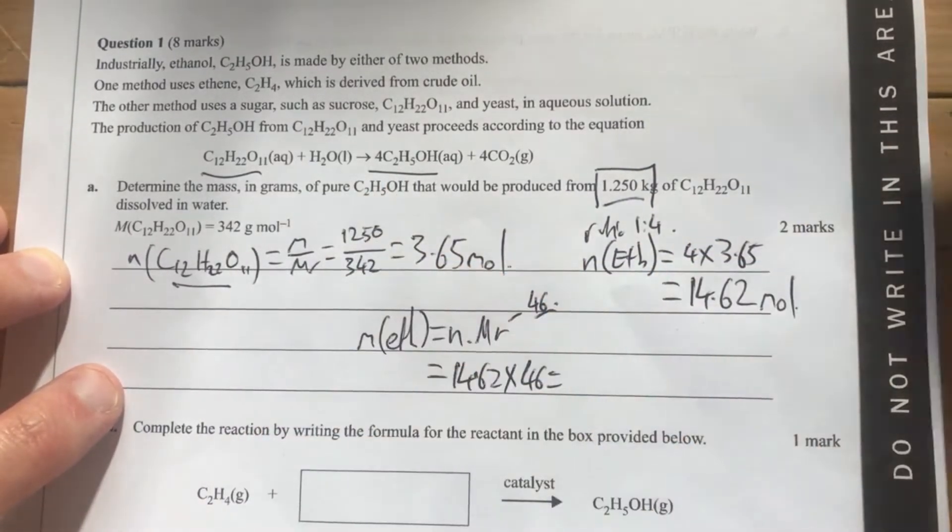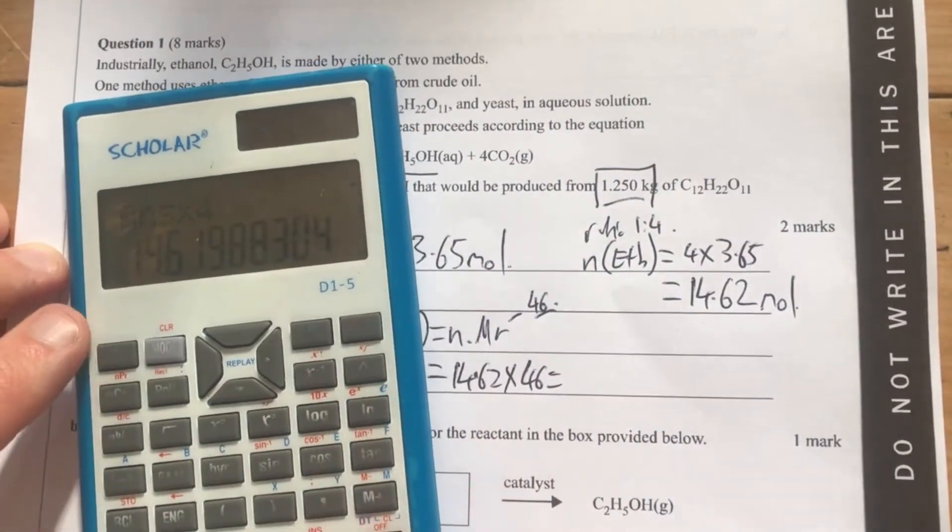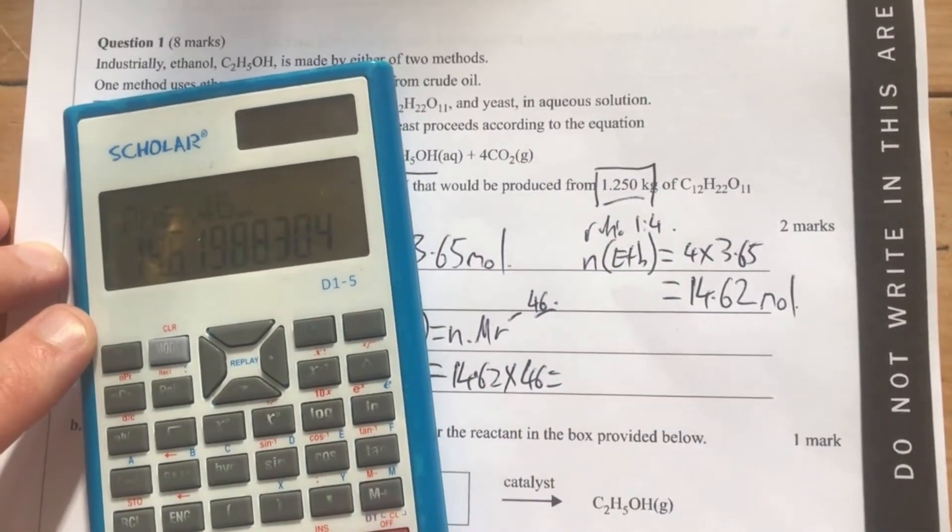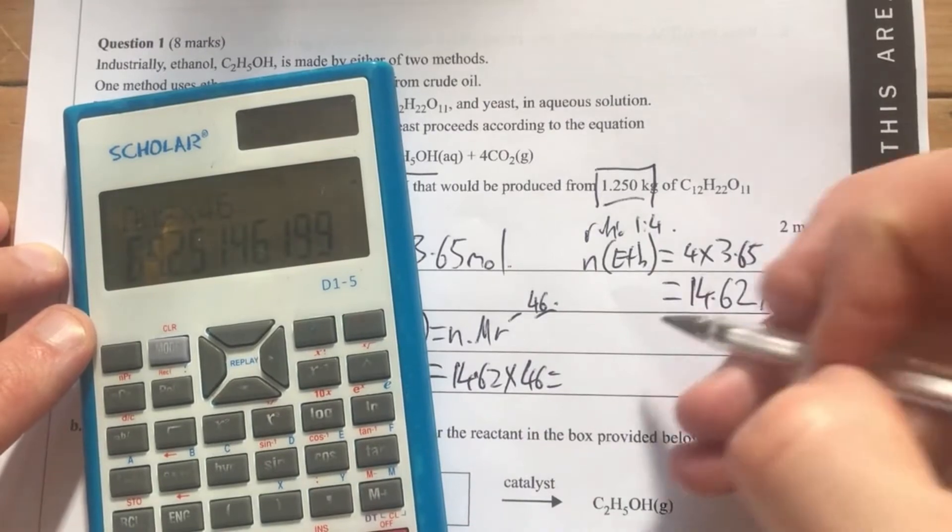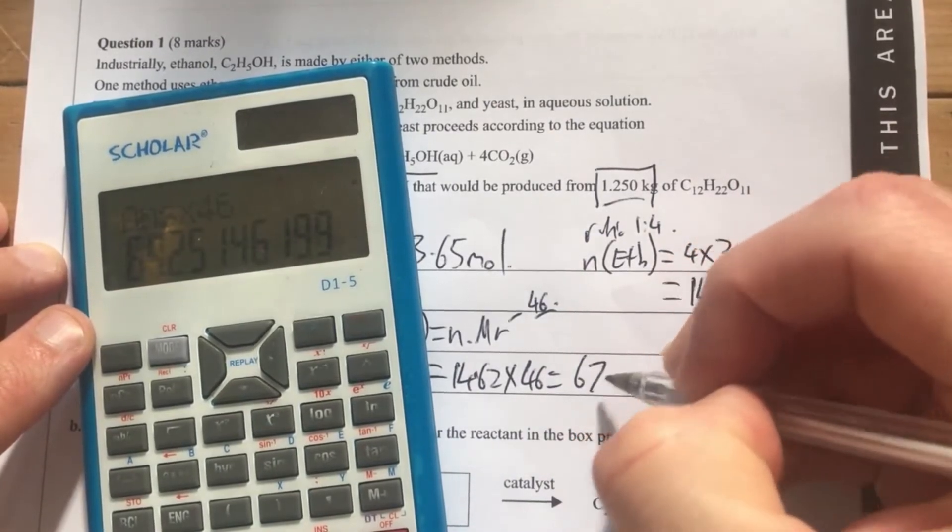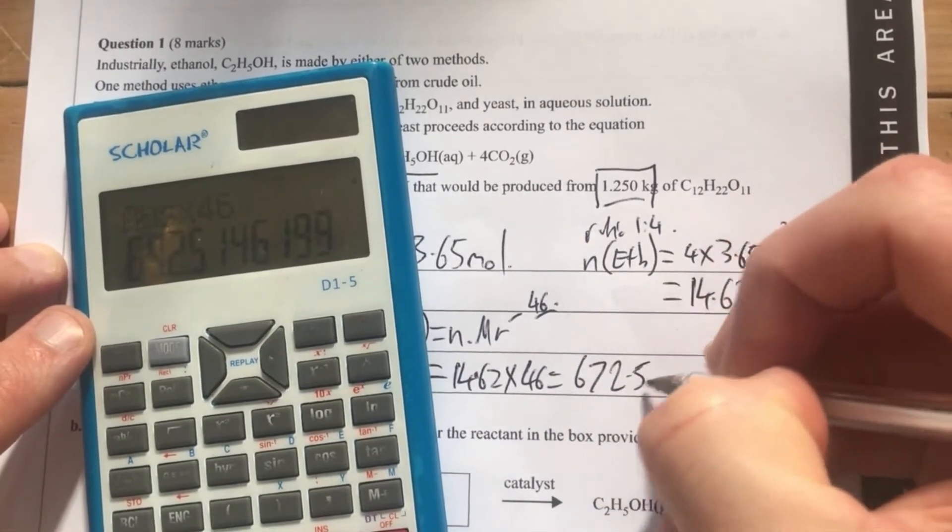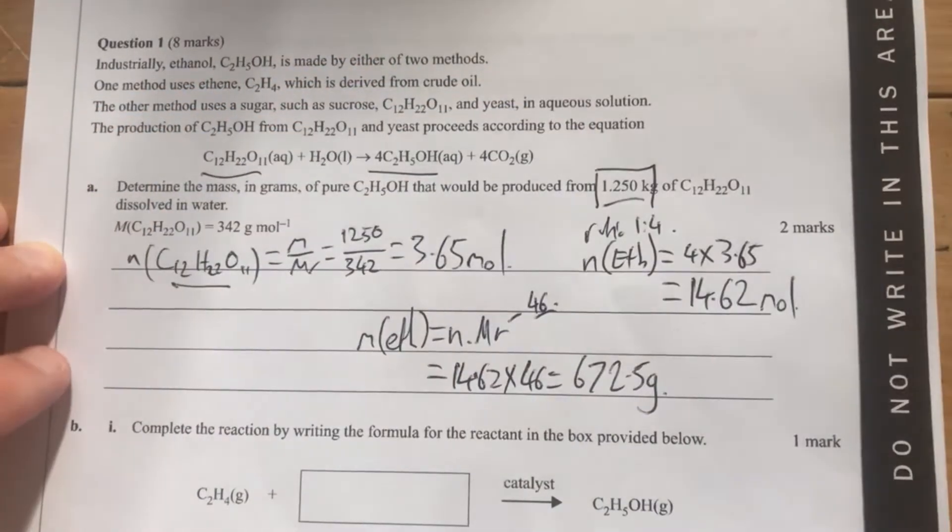Ethanol is one of the ones that you use fairly often, so it's nice to kind of have some of these in your knowledge bank. So that's times 46, which is going to give you 672.5 grams of ethanol.